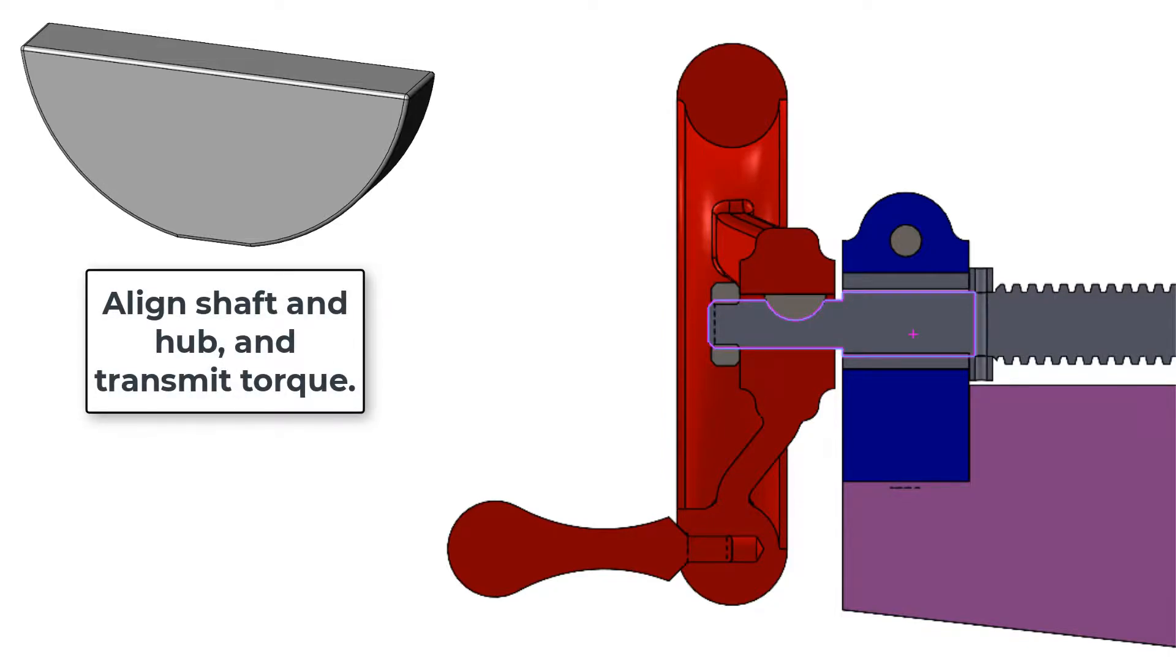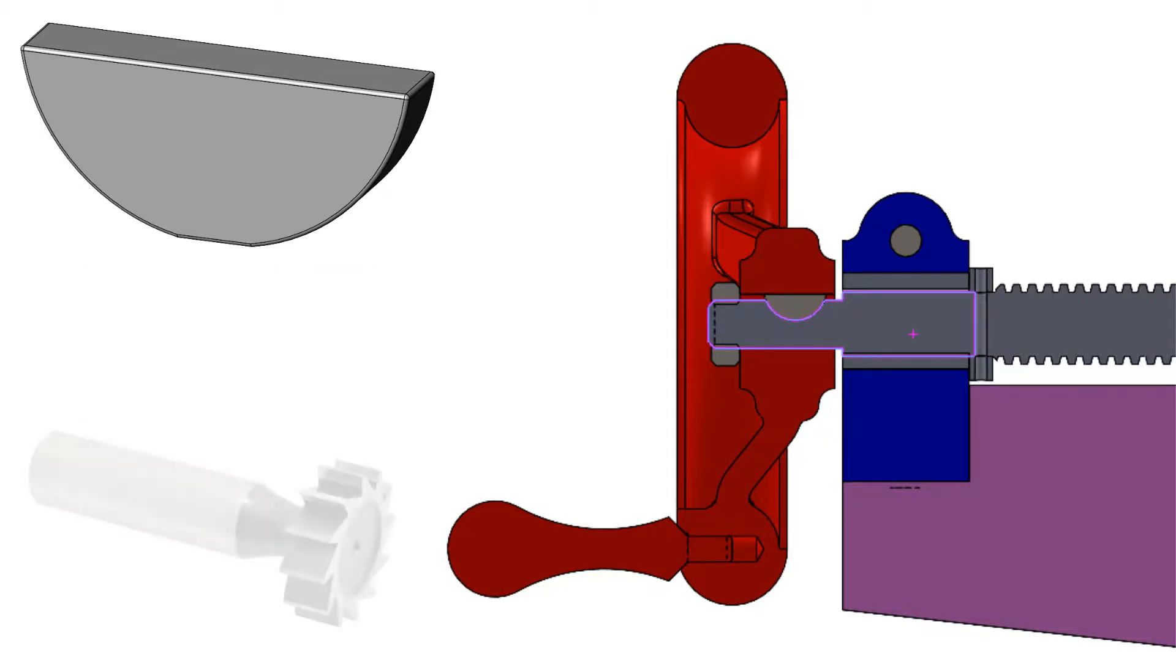Woodruff keys both align hubs on shaft and transmit torque between the shaft and the hub. To use a Woodruff key, the half circular side of the key is inserted into the shaft and then the keyway of the hub is slid over the key.